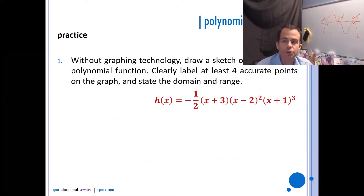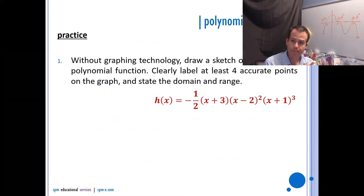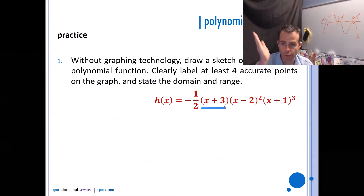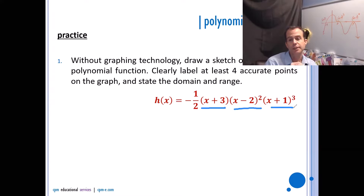Without graphing technology, draw a sketch of a polynomial function. Clearly label at least four accurate points and state the domain and range. I know I have x-intercepts at negative three, at two, and at negative one — just reading off the factors. At negative three I'll go straight through because the multiplicity is one. At two I'll change direction because the multiplicity is two. At negative one I'll have a point of inflection because the multiplicity is three.